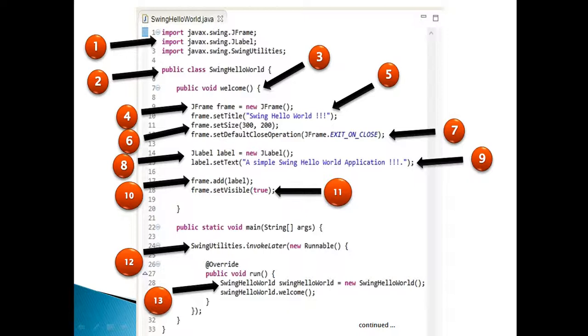Moving ahead. Step 3, create a method in Swing Hello World called Welcome. This method will create desktop GUI for us. It displays a frame having a simple label added to it.